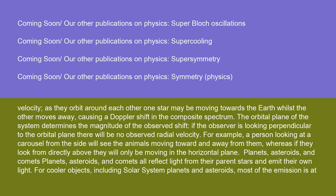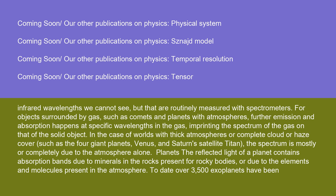Planets, asteroids, and comets all reflect light from their parent stars and emit their own light. For cooler objects, including solar system planets and asteroids, most of the emission is at infrared wavelengths, routinely measured with spectrometers. For objects surrounded by gas, such as comets and planets with atmospheres, further emission and absorption happens at specific wavelengths in the gas, imprinting the spectrum of the gas on that of the solid object. In the case of worlds with thick atmospheres or complete cloud or haze cover — such as the four giant planets, Venus, and Saturn's satellite Titan — the spectrum is mostly or completely due to the atmosphere alone.